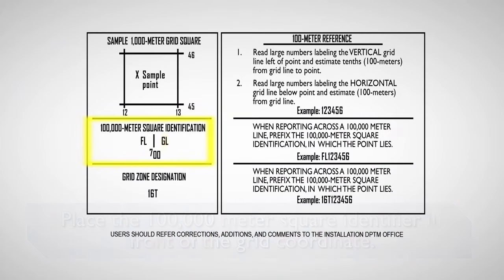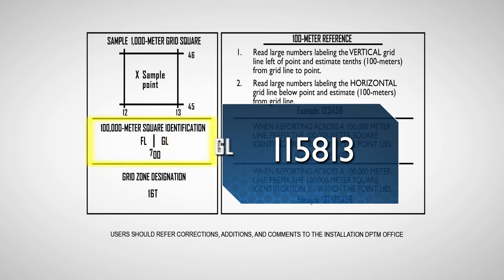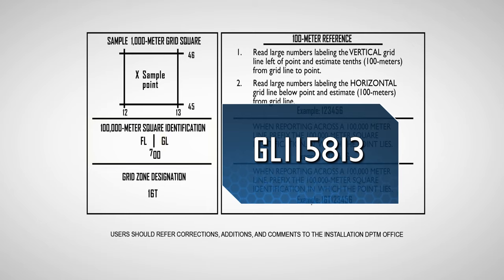In the example given, the grid coordinate becomes Gulf-Lima, 115,813. Further location precision can be achieved by using the grid zone designation listed in the map's margin. Identify the grid zone designation, 1-6-Tango, in this example by looking in the grid zone designation box in the margin of the map.